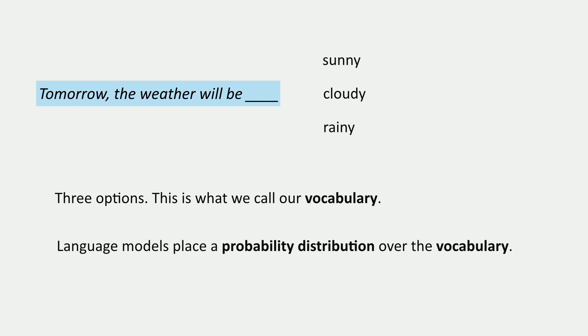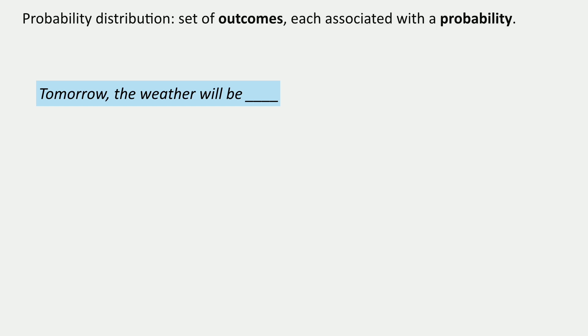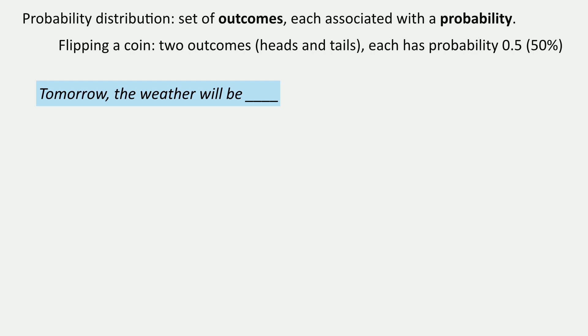What language models do is place a probability distribution over the vocabulary. A probability distribution assumes you have a set of possible outcomes for some event, and each outcome is associated with a probability. One of the simplest probability distributions is just flipping a coin — there are two outcomes, heads or tails, and each one has probability 0.5 or 50%.